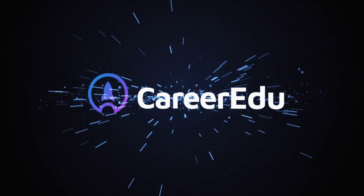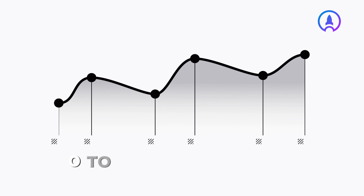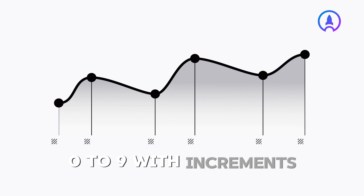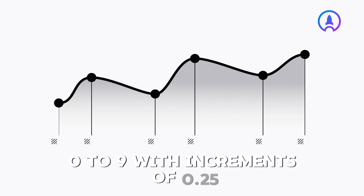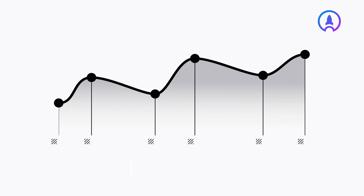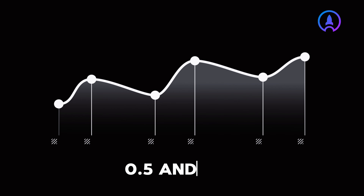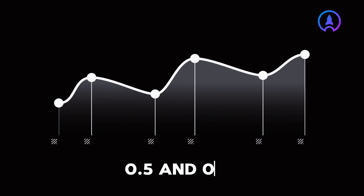First, how are IELTS scores calculated? The individual IELTS scores for listening, reading, writing and speaking are all equally weighted. They are rated from 0 to 9 with increments of 0.25, 0.5 and 0.75.